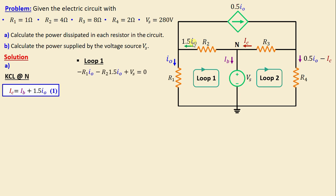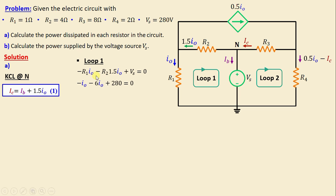In Loop 1 we can write: −R1·IO − R2·(1.5·IO) + VS = 0. Replacing the resistors and voltage with their numerical values, we obtain: −IO − 6·IO + 280 = 0.